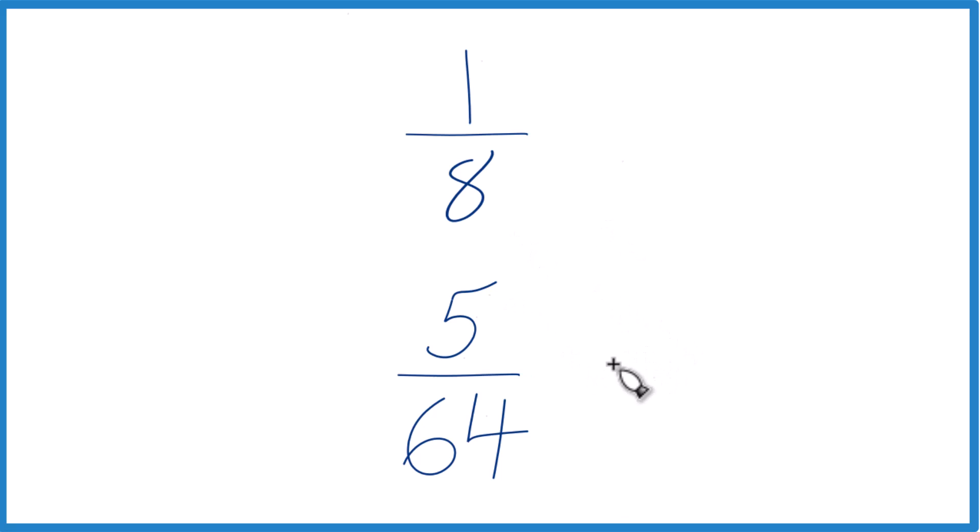The other way is to find a common denominator. Right now we have eight and then 64. But if that were the same, we'd just compare the numerators and we'd know if one-eighth is greater than or less than five-sixty-fourths.